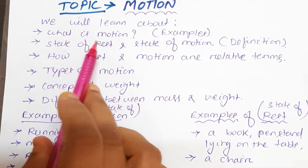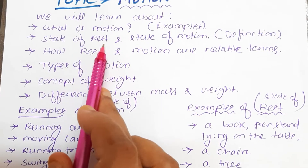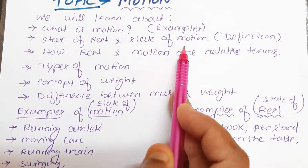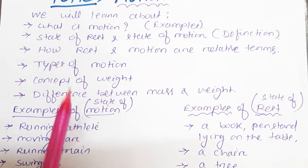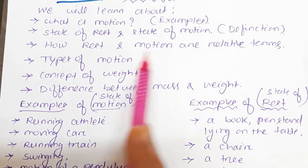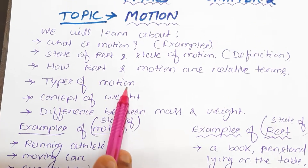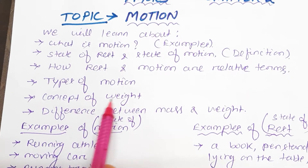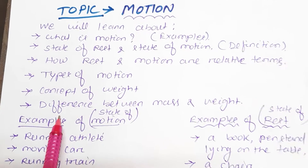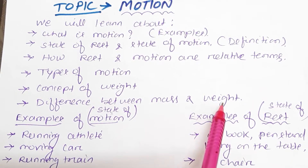First is what is motion; next, what about the state of rest and state of motion; how rest and motion are relative terms; what are the types of motion; what is the concept of weight; and at last, what is the difference between mass and weight.